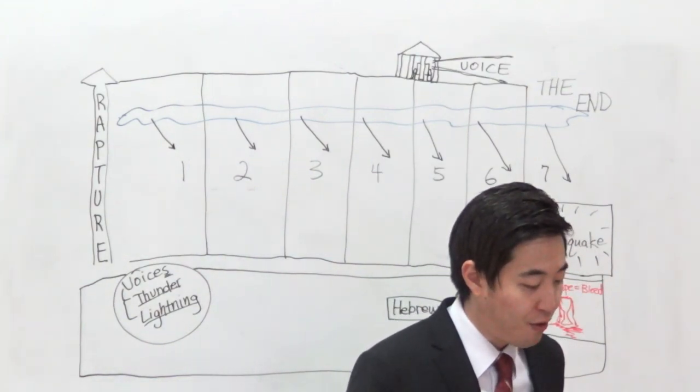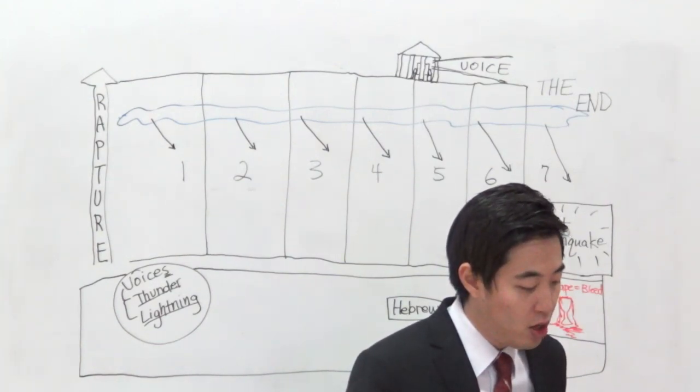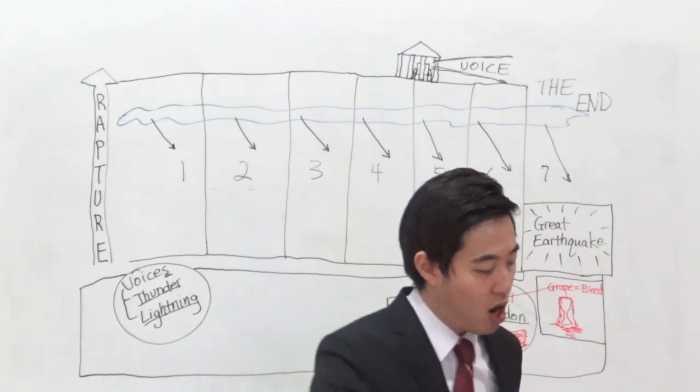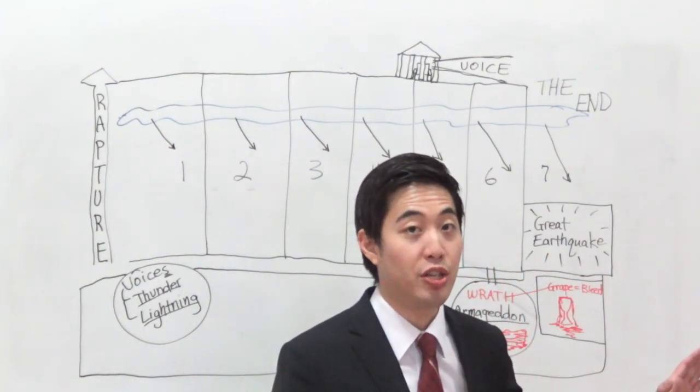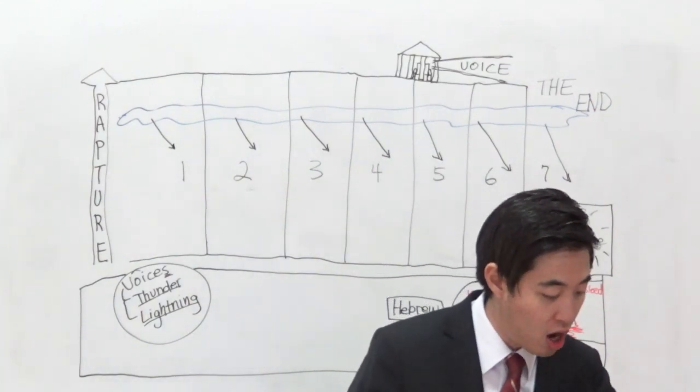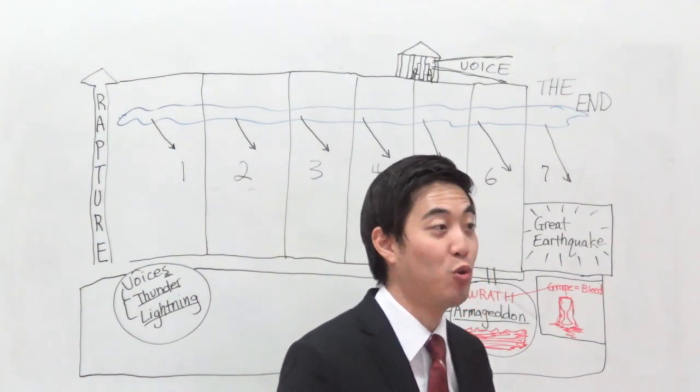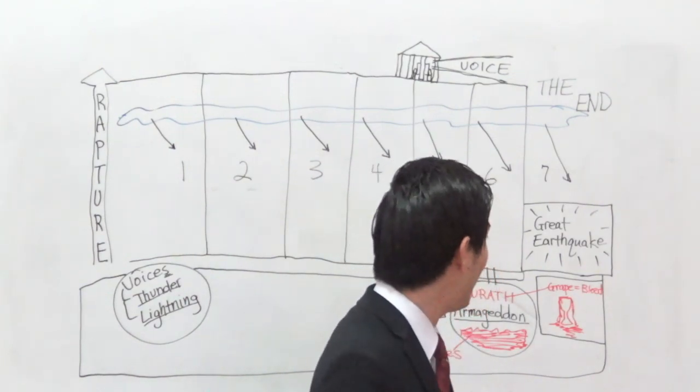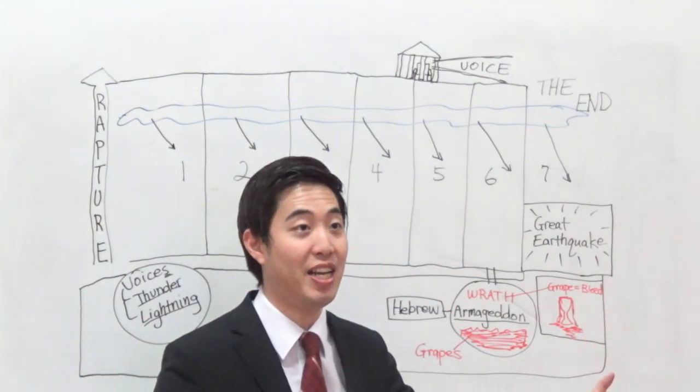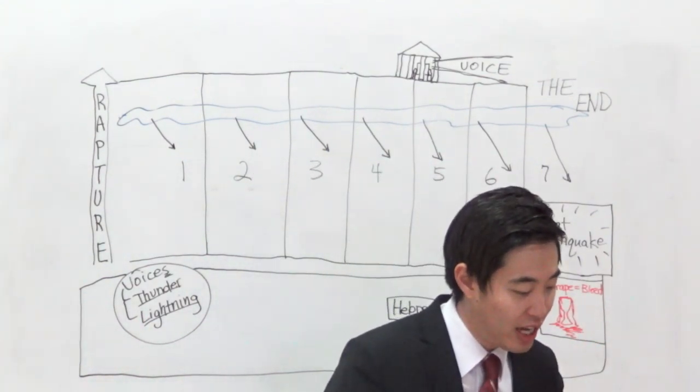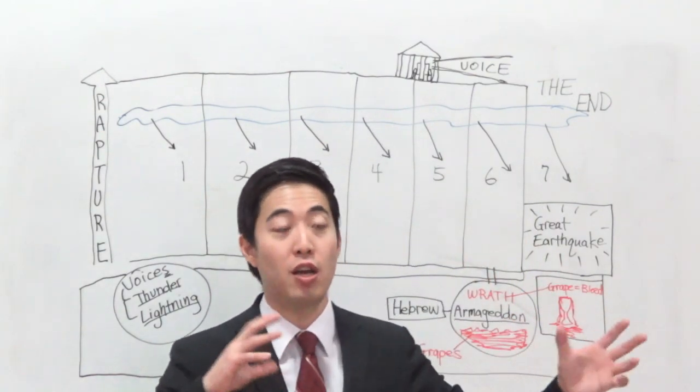Look at verse 20. And every island fled away, and the mountains were not found. So notice here, the islands are gone, and the mountains are no longer seen. The mountains are gone, and the islands are not seen. So this is some sort of earthquake. This earthquake just causes so much destruction around the cities that even practically islands are being sunk, and then the mountains are actually just being destroyed.